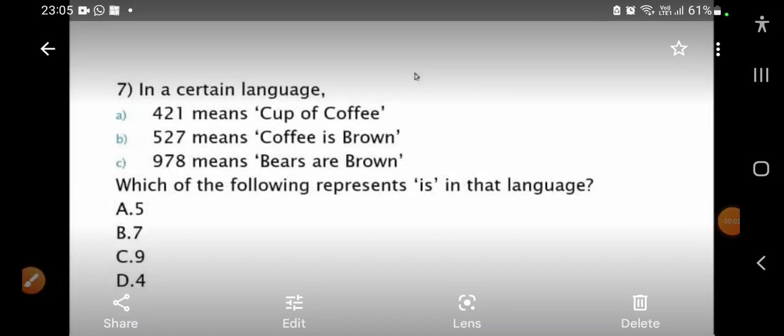Hello everyone, welcome to KNO Academy YouTube channel. In this video, I am going to explain how to solve this problem. In a certain language, 4, 2, 1 means cup of coffee, 5, 2, 7 means coffee is brown.